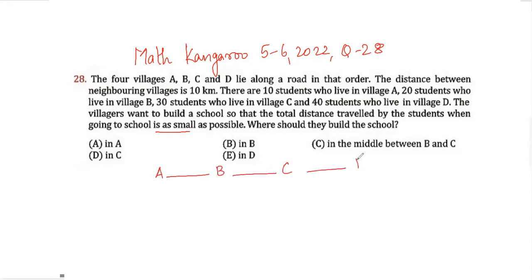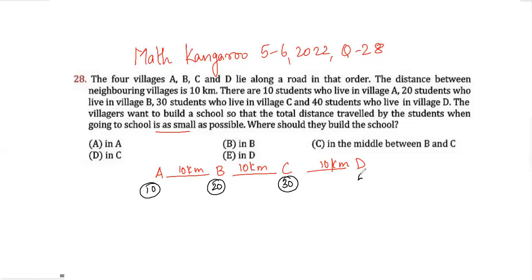So the information given is: there are four villages A, B, C, D and they are all 10 kilometers apart. There are 10 students in village A, 20 students in village B, 30 students in village C, and 40 students in village D. The villages want to build a school so that the total distance traveled by the students when going to school is as small as possible.